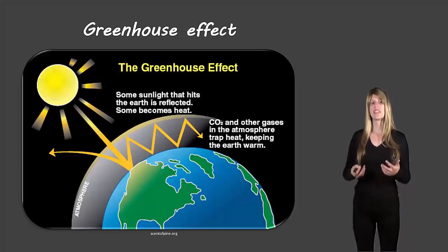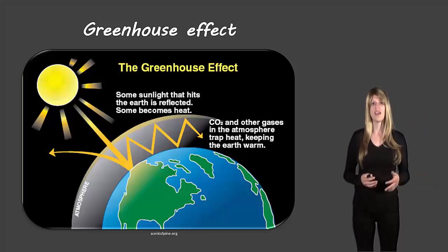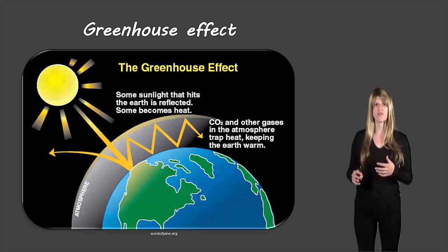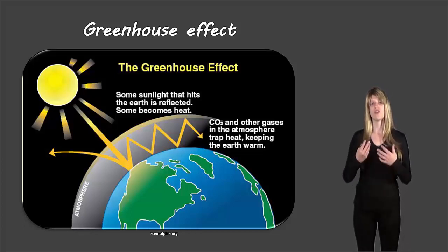So first of all, the greenhouse effect is a natural process. It is something that would happen even if humans weren't on earth. And in fact it takes the temperature from about minus 18 degrees Celsius to about positive 15. So that's sort of on average around the globe it would be minus 18 on average everywhere and it's now positive 15 degrees Celsius on average everywhere on earth because of that greenhouse effect. So it makes it a livable place for humans.